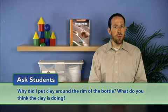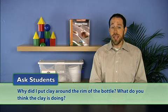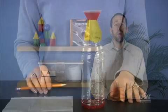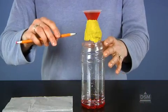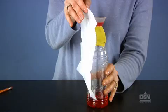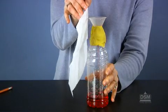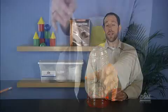Ask students: why did I put clay around the rim of the bottle? What do you think the clay is doing? Some students may realize that the clay is keeping the air in the bottle from escaping. Tell students that you are going to poke a hole in the clay and hold a sheet of tissue paper near the neck of the bottle so that students can see the tissue paper move when the air escapes.